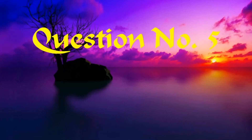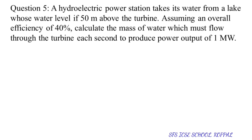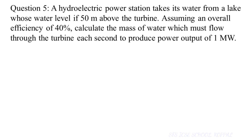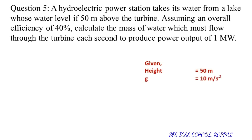Question number five of exercise: A hydraulic power station takes its water from a lake whose water level is at a height of 50 meters above the turbine. Assuming an overall efficiency of 40%, calculate the mass of water which must flow through the turbine each second to produce a power output of one megawatt. Gravity is equal to 10 meters per second squared.